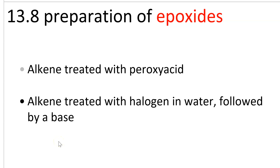we treat our alkene with a halogen in water instead of CCl4. This makes a halohydrin. And then we use a base to deprotonate the alcohol, and it does an intramolecular SN2 on the alpha carbon of the halide.